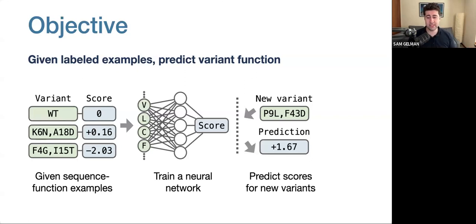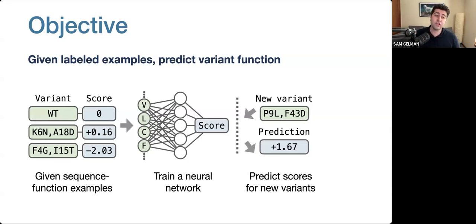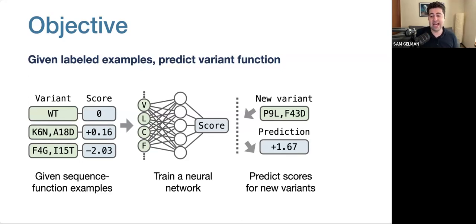Our goal is to use this sequence-to-function data to train a neural network. The network takes amino acid sequences as input and predicts their corresponding functional scores. Once the network is trained, we can take it and predict the function of new variants that were not experimentally characterized. Hopefully, if the model generalizes well, we can get accurate predictions that will help us do protein design.